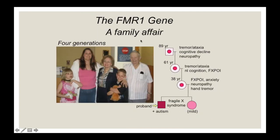FMR1 is truly a family affair. In a four-generation family, two children present with fragile X syndrome; the boy also has autism — fragile X is the most common monogenic form of autism, with 60–70% of children with fragile X presenting with autism symptoms. The mother has FXPOI with neuropathy and tremor. The grandmother of the two kids also presented with tremor and was a FXTAS case with normal cognition and FXPOI. The great-grandfather also had FXTAS with additional features including neuropathy and cognitive decline.